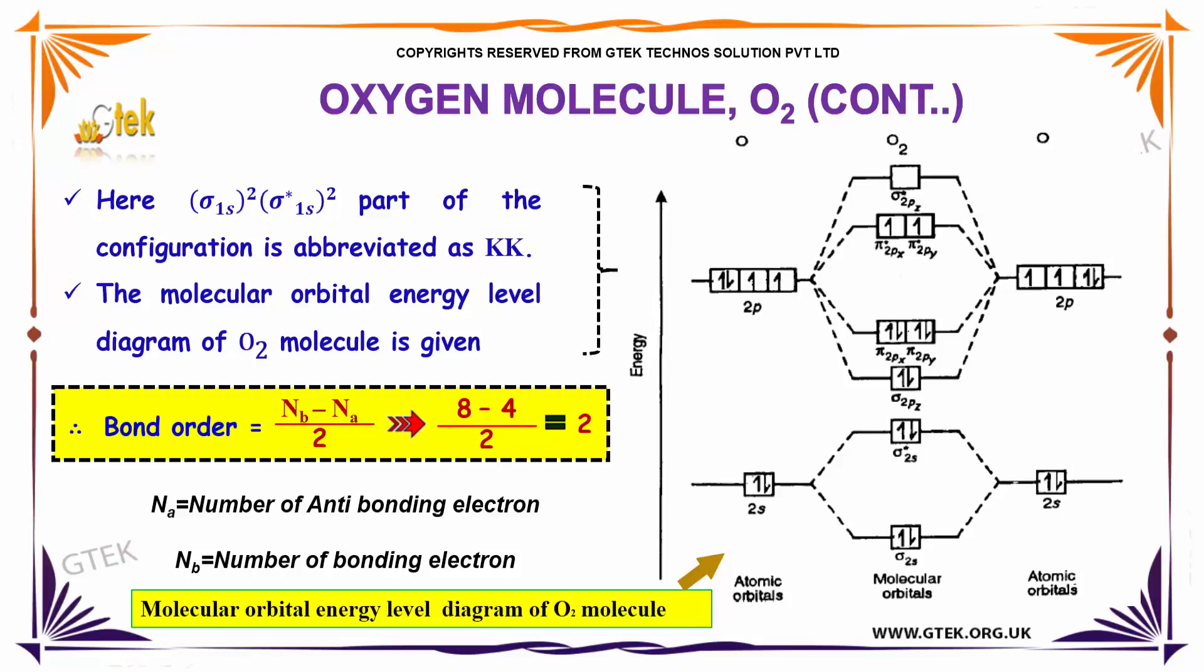The molecular orbital energy level of oxygen molecule is Nb which is equal to 8, 2 plus 6, that's 8 and you got your Na as 2 plus 2, that's 4. So 8 minus 4 which is 4, 4 divided by 2, the value is 2. So the bond order for oxygen is 2.